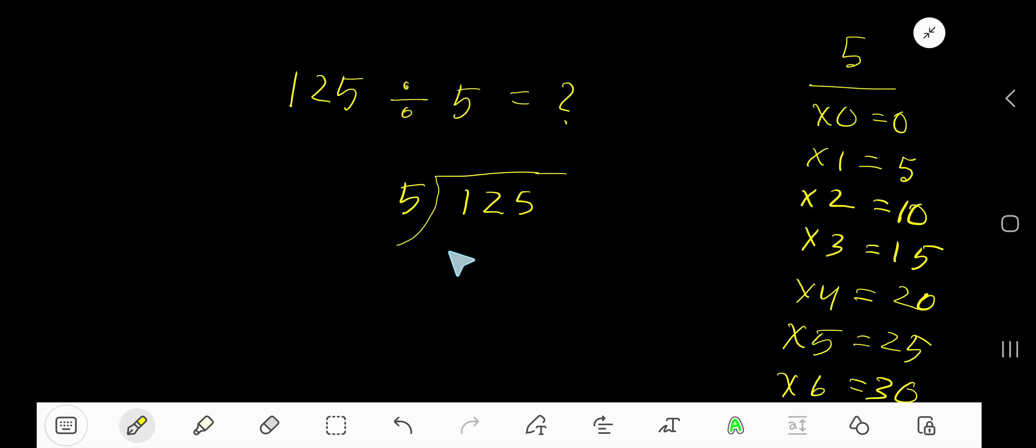125 divided by 5. Here 5 is the divisor, so we need the multiplication table of 5. 5 times 0 is 0, 5 times 1 is 5, 5 times 2 is 10, 5 times 3 is 15, 5 times 4 is 20. To find the multiplication table of 5, just add 5 with the previous step: 0 plus 5 is 5, 5 plus 5 is 10, 10 plus 5 is 15, 15 plus 5 is 20.